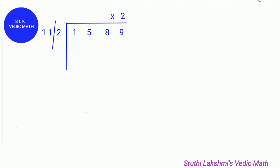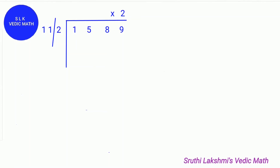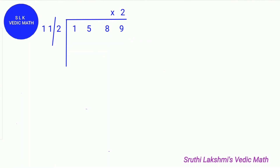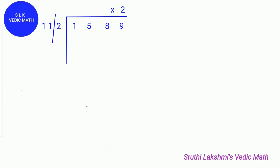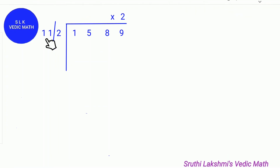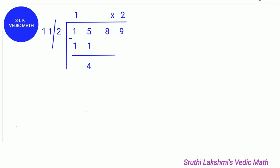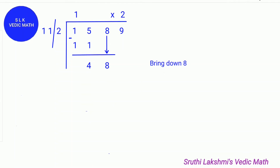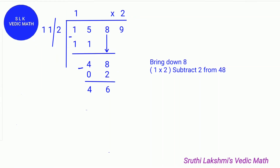Another example: 1589 divided by 112. The dividend is 1589 and the divisor is 112. We put a slash separating the last digit 2 from the other digits. How many 11s can fit in 15? One 11 can fit, so we write 1 on the quotient line. 11 times 1 is 11, so we do 15 minus 11, which equals 4. Next we bring down the 8. Then the quotient's last digit times the divisor's last digit: 1 times 2 is 2. So we do 48 minus 2, which equals 46.